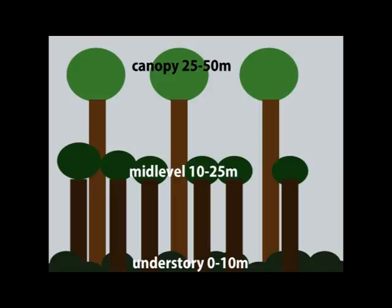The level which the primate occupies within the forest is also an important factor, and can be divided into the canopy, mid-level, and understory. The canopy is the top of the forest where the tallest emergent trees are found. This is the driest and hottest part of the forest during the day, as it has less shade. Growth in the understory is restricted by a lack of sunlight reaching ground level, which means it is easy to manoeuvre through, as there is little vegetation.